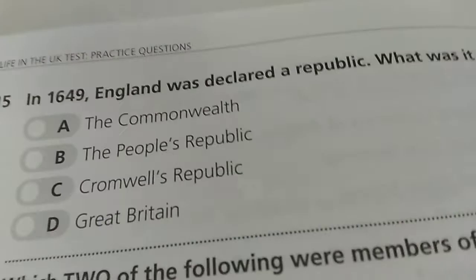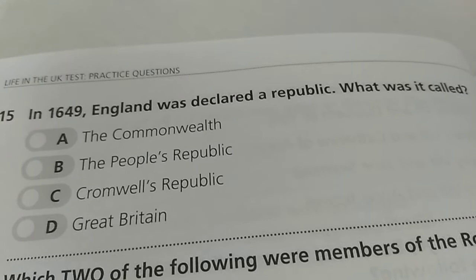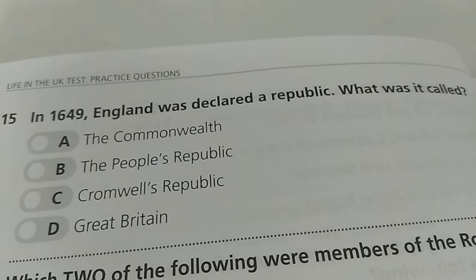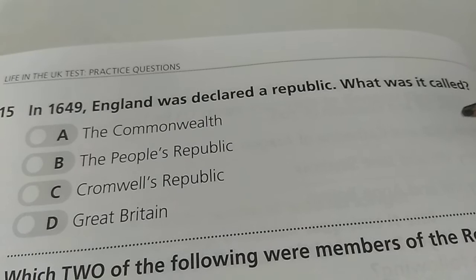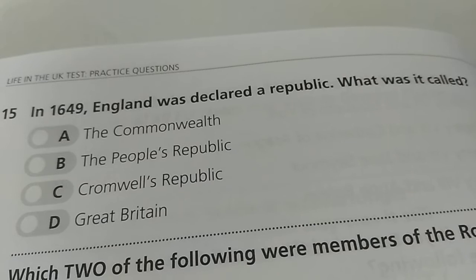Question No. 15: In 1649, England was declared a republic. What was it called? A. The Commonwealth, B. The People's Republic, C. Cromwell's Republic, D. Great Britain. Cromwell was known as the Lord Protector, but the republic was called the Commonwealth. The correct answer is A — it was called the Commonwealth.